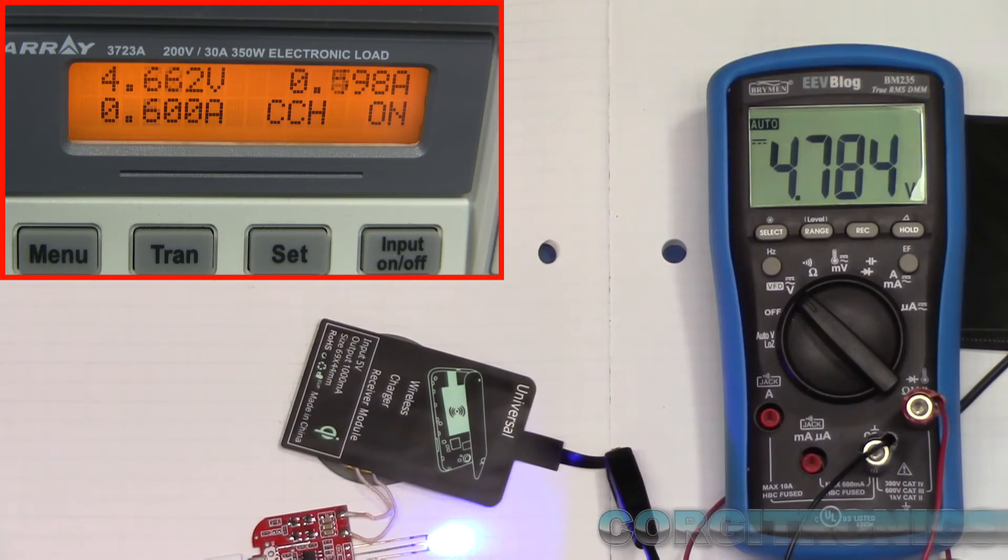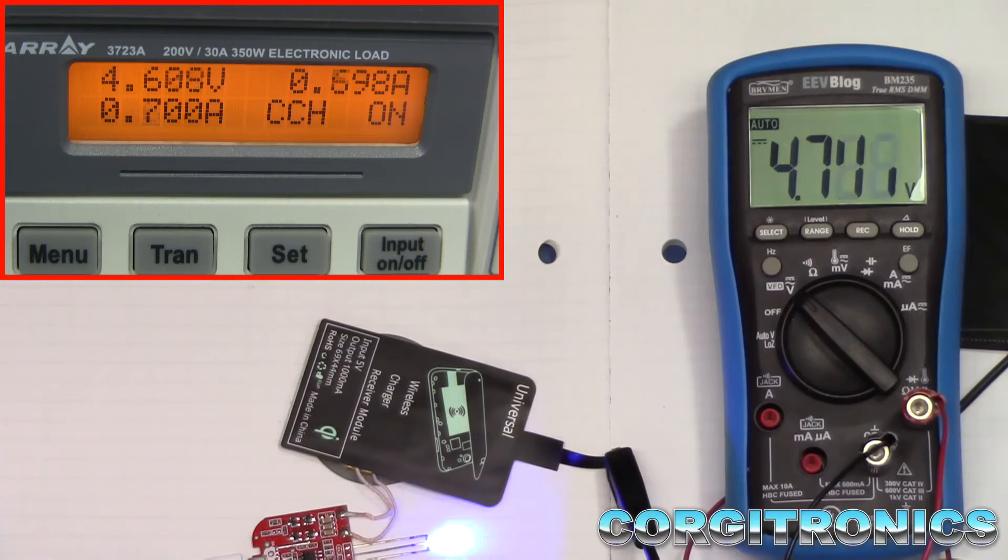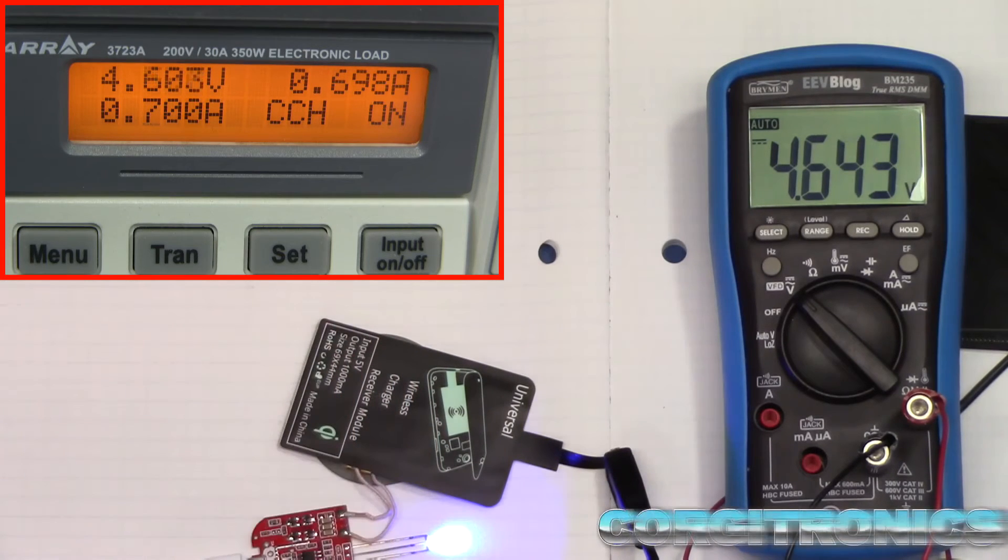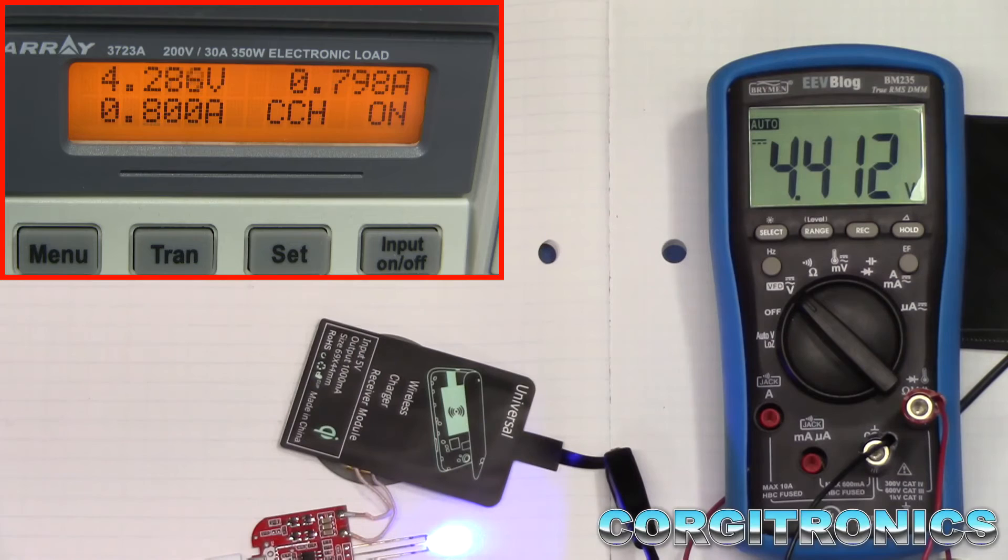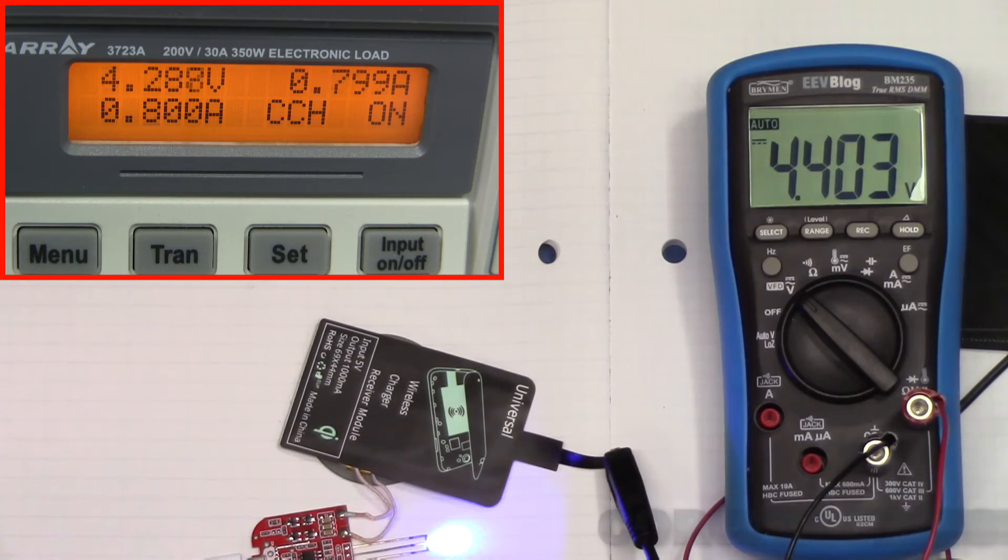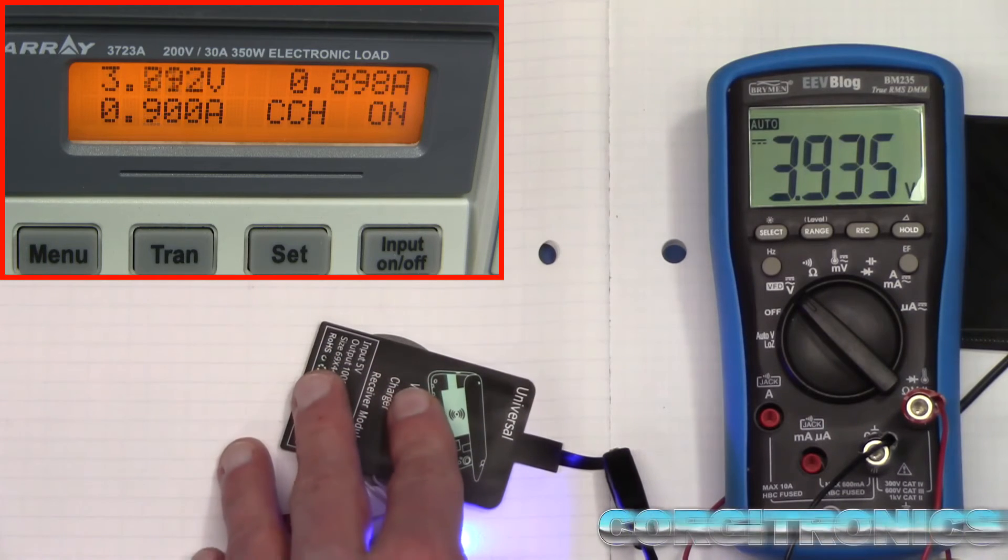There we go. Now it's holding up a little better. So, you got to be real careful how you position this one. And 700 milliamps, it's starting to drop out. And most chargers, most phones would probably stop charging here at this point. So it won't quite get you that one amp that you're expecting.